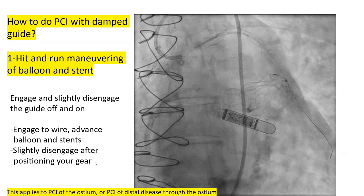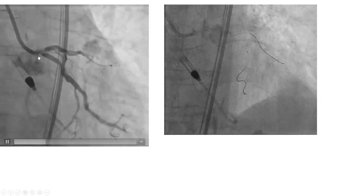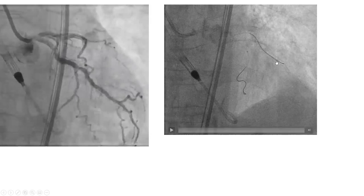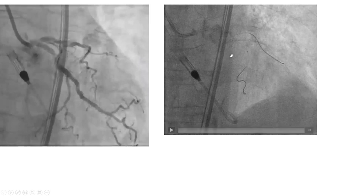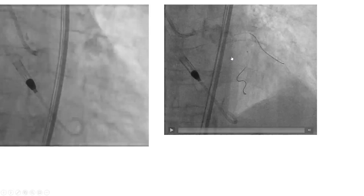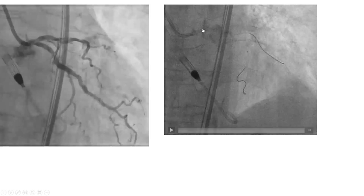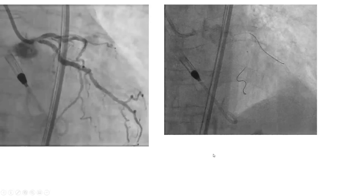Here is an illustration. This patient had severe left main disease — osteal and distal. We did hit-and-run maneuvering: quickly engaged the left main, quickly wired the LAD, then disengaged. Re-engaged to quickly wire the circumflex. Then we ballooned the left main to allow the patient to tolerate future maneuvers and be less ischemic each time we engage. We kept doing hit-and-run maneuvering throughout the case and eventually did a DK crush. Ballooning at the beginning helps the patient tolerate ischemia more, and doing multiple hit-and-run maneuvers through the case helped the patient tolerate the procedure from an ischemia standpoint.